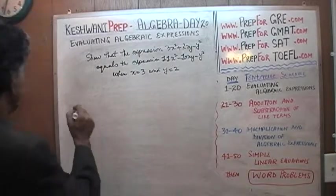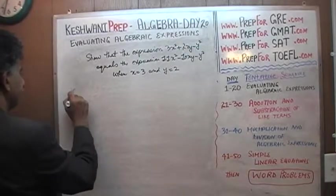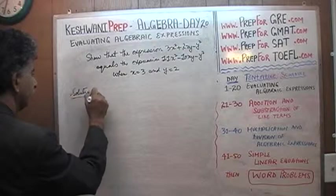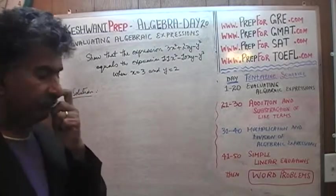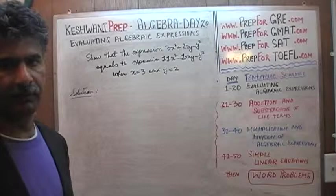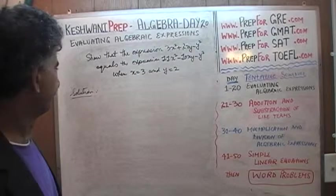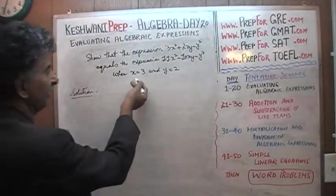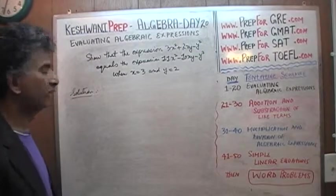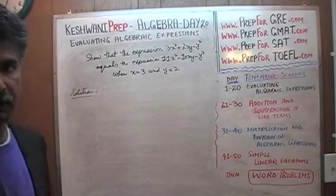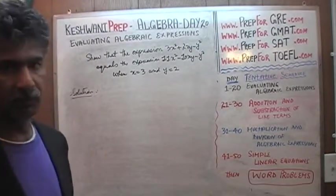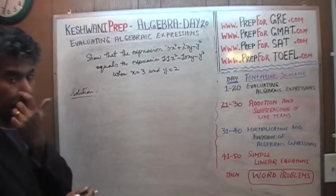Alright, so let's get going. The very first thing we need to do is to give these two expressions names — that's how it's done in algebra. Although we could just put in the value of x equals 3 and y equals 2 and show they are equal and be done with it, we're going to do it in a proper way, the way it should be done. We're not going to cut corners.